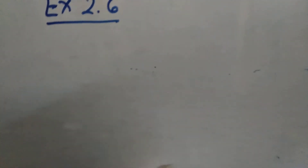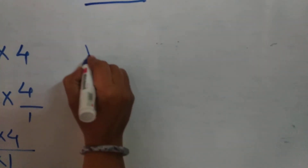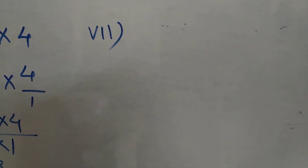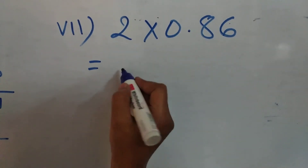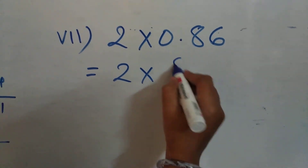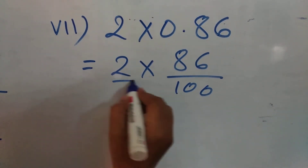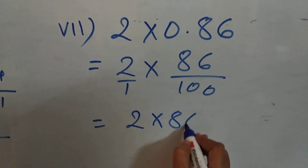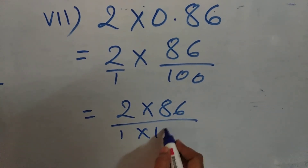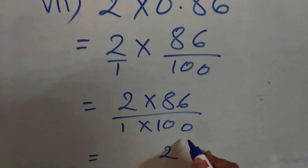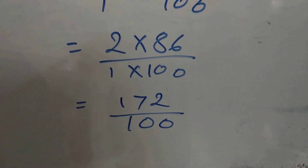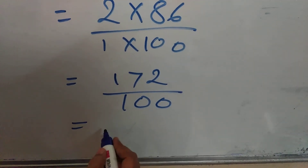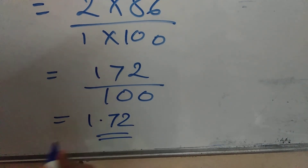Now the seventh sum: 2 multiplied by 0.86. Convert 0.86 into a fraction and carry out the multiplication: 2 into 86 upon 1 into 100, giving 172 upon 100. Convert to decimal — 1.72 is the answer.